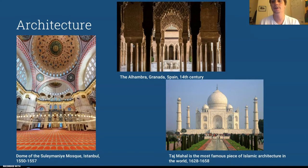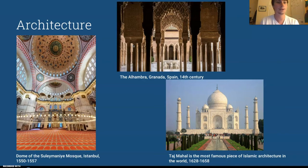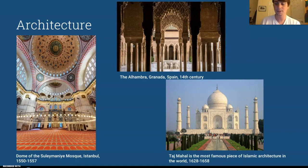Islamic architecture is very unique and embodies some of the styles, patterns, and repetition discussed earlier. As you can see, these mosques are huge. The Taj Mahal is one of the most famous pieces of Islamic architecture. The dome in Istanbul and the Alhambra in Spain all developed throughout time during the expansion of Islamic art.